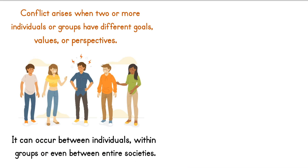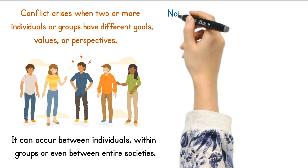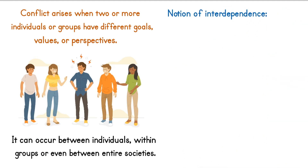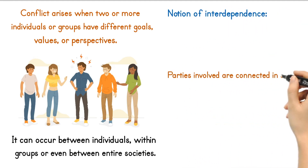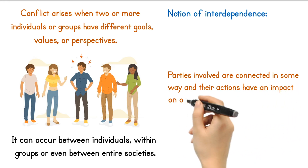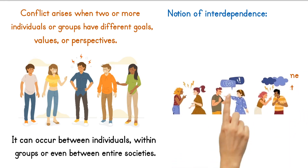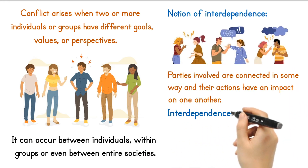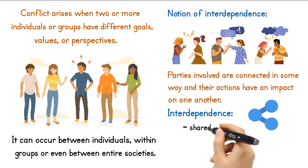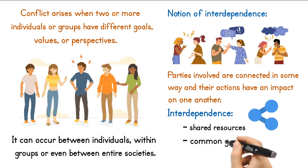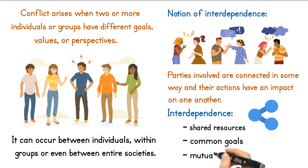One of the key factors in understanding conflict is the notion of interdependence. This means that the parties involved are connected in some way and their actions have an impact on one another. Interdependence can take many forms, such as shared resources, common goals, or mutual dependencies.